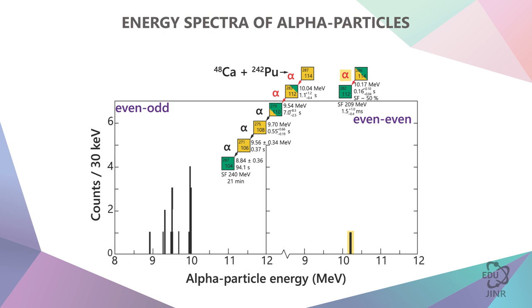Here it is, this alpha decay. And then spontaneous fission happens, and the odd-numbered one has a rather long chain, starting with one alpha decay, then a second, a third, a fourth, a fifth, and then spontaneous fission.